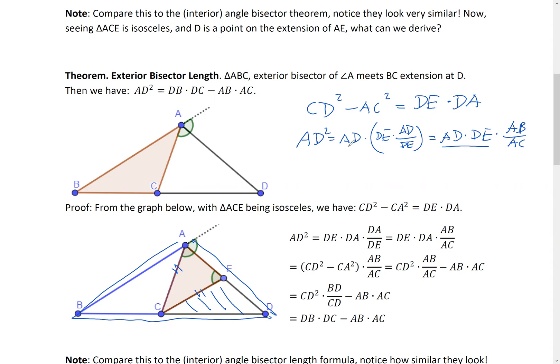All right. Now I think I'm ready to move on. So AD times DE is this. So this equals carry on CD square minus AC square times AB over AC. That is CD square times AB divided AC minus AC square times AB over AC. That's exactly AB times AC.